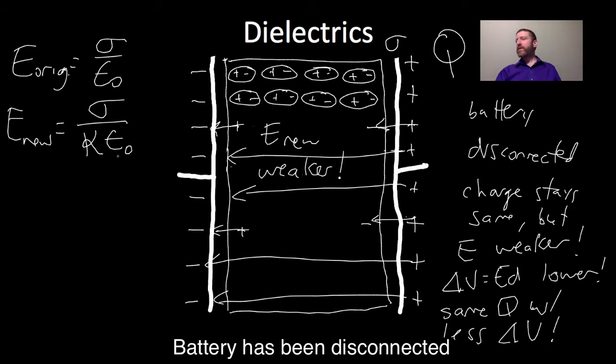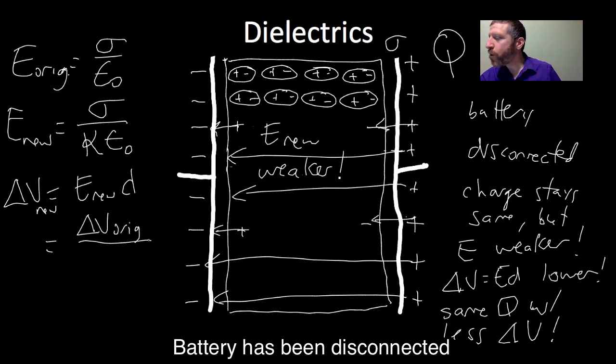Notice kappa is a number that's typically greater than one. So our new electric field is weaker. So our new delta V, which is equal to E new times D, is the same thing as it was before, delta V old, original, but it's over kappa. And the E new is just like the E field old, original. So the E field has been weakened, but let's see what this does to our overall capacitance.